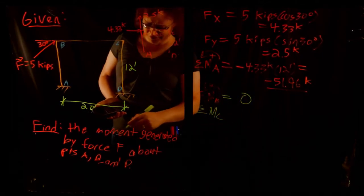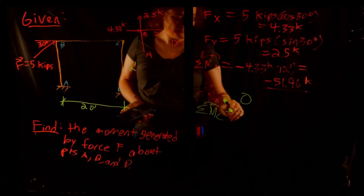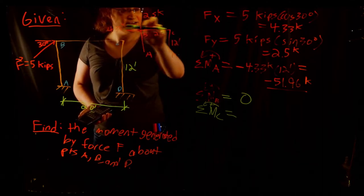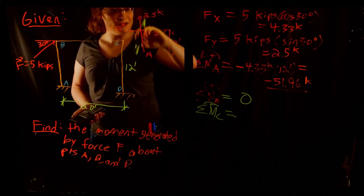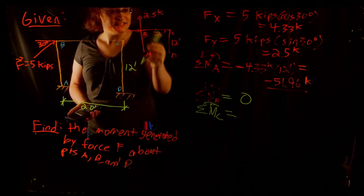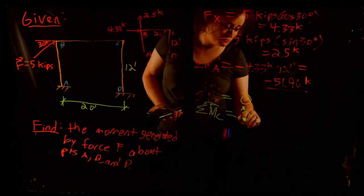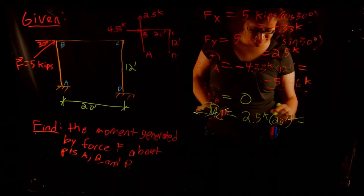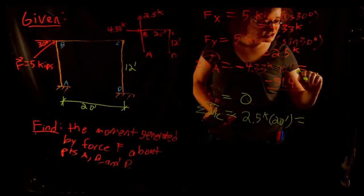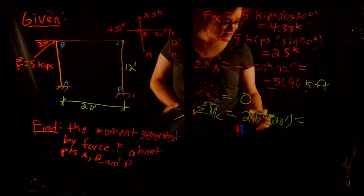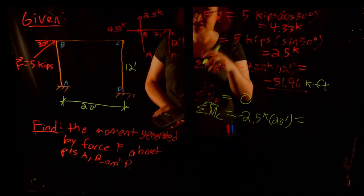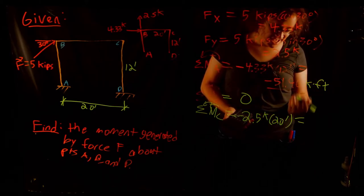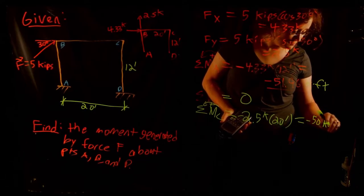Sum of moments about point C. The horizontal component will not generate a moment about C because its line of action passes directly through C. However, the vertical component will generate a negative (clockwise) moment about C. That is a 2.5 kip force times a moment arm of 20 feet, which gives negative 2.5 × 20 = negative 50 kip-feet.